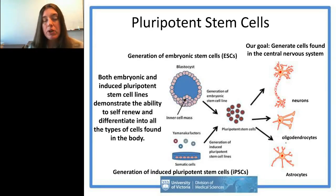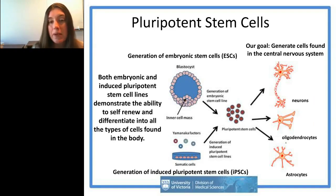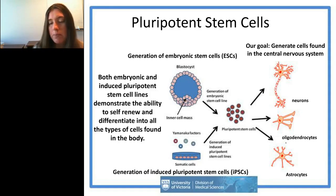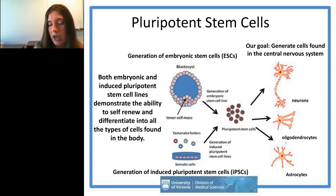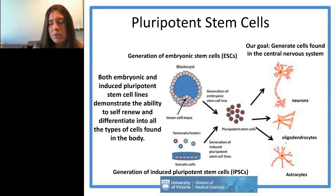My lab works with pluripotent stem cells, which have two main properties: they can self-renew indefinitely, and they can become any cell type found in the body. For a while the main pluripotent stem cells used in research were embryonic stem cells. Mouse ESCs were generated first in 1981, with human cells produced much later in 1996. These are derived from the inner cell mass of the blastocyst, and we direct these cells to make neurons, oligodendrocytes, or astrocytes.